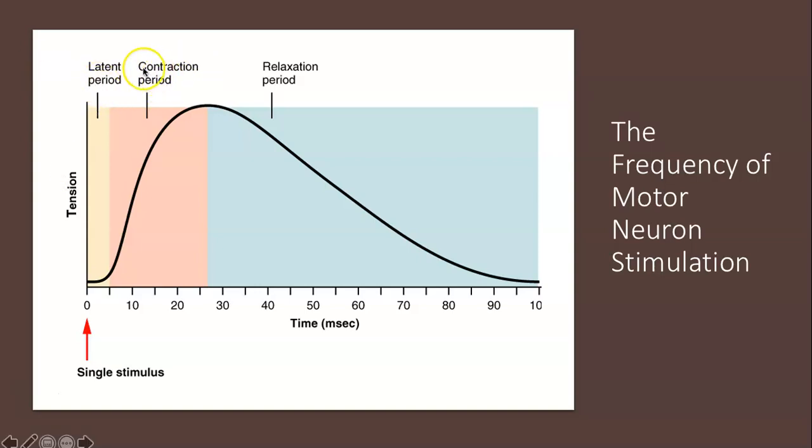Contraction occurs during the contraction phase. The calcium ions that are now in the sarcoplasm have bound to troponin, tropomyosin has shifted away from actin binding sites, cross bridges are formed, and sarcomeres are actively shortening to the point of peak tension.